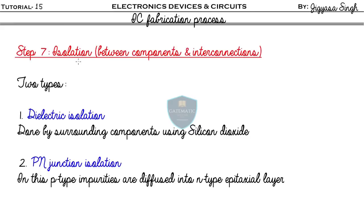Step seven is isolation. We do this because we want to separate our components and interconnections — we don't want them to be merged. There are two methods: number one is dielectric isolation, done using SiO₂ as the insulating material; number two is p-n junction isolation, where p-type impurities are diffused into the n-type epitaxial layer, which separates the components and interconnections.